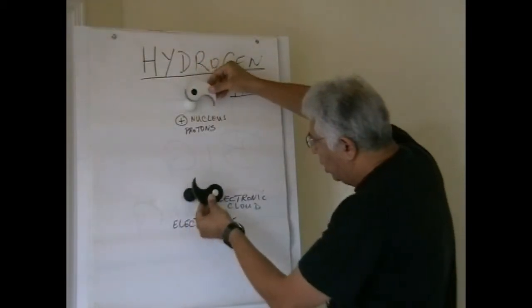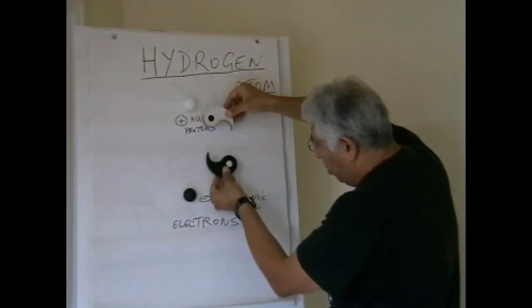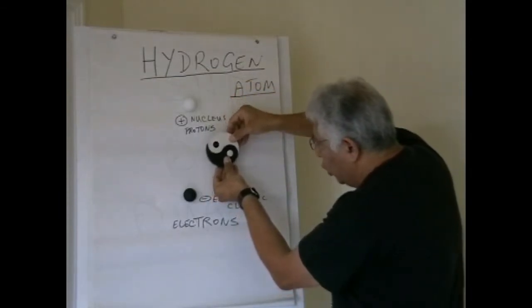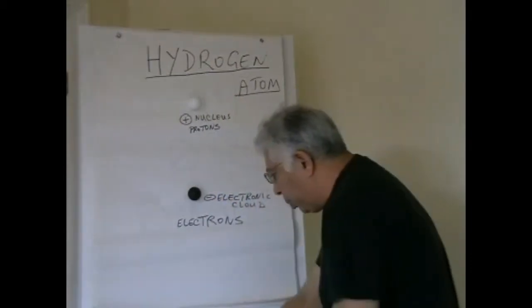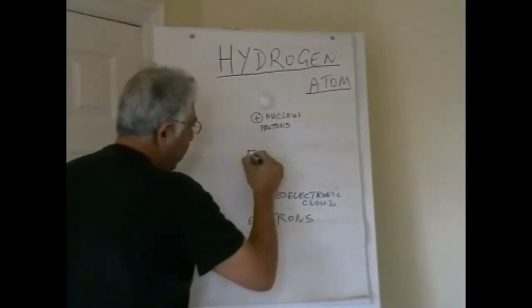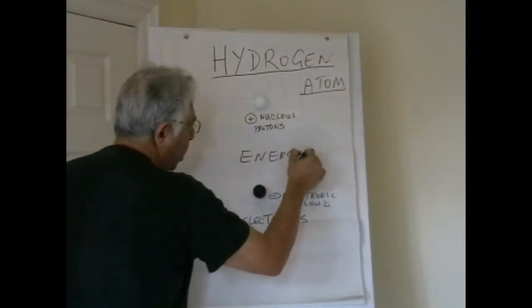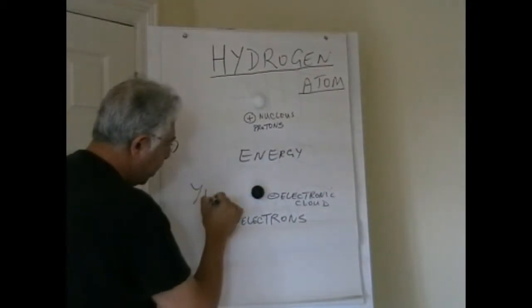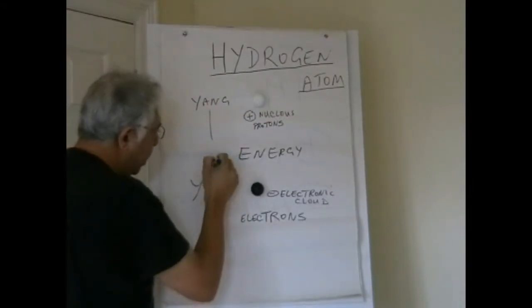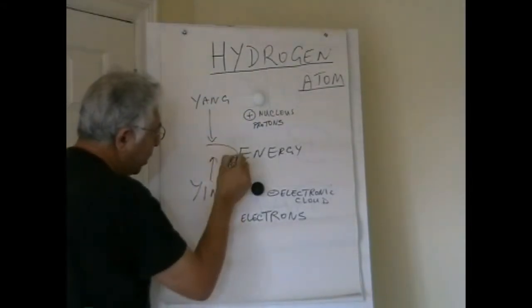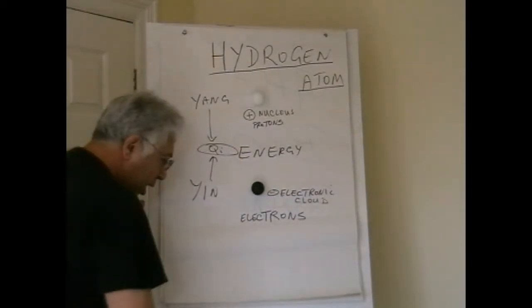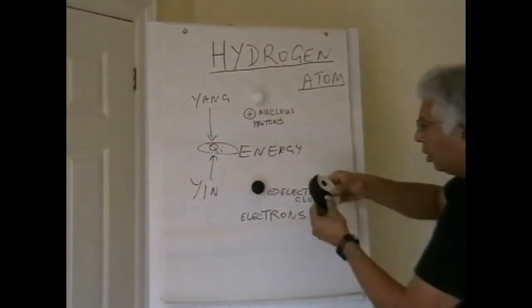The electrons move around the nucleus like a cloud — what is called an electronic cloud. So you put the yin and the yang together, and as mentioned earlier, you create energy. The simplest atom, hydrogen, has yin and yang put together to create energy — chi.